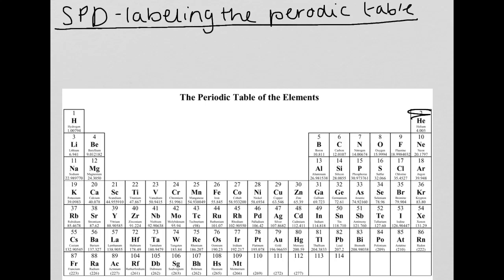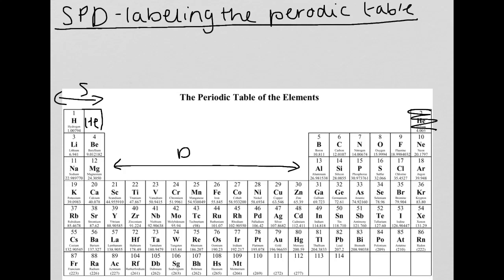There are a couple of labels you have to add to the periodic table to help us understand this. We add helium over here. This is the S block of the periodic table, this is the D block, and this is the P block. Then we number them: 1, 2, 3, 4, 5, 6 for one set and 1, 2, 3 for the other. We'll come back to that later, but it helps to know it now.